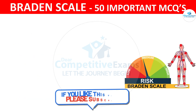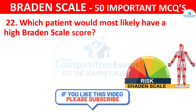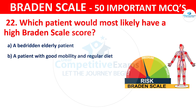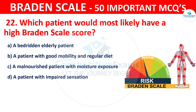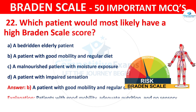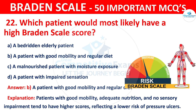Question number twenty-two: Which patient would most likely have a high Braden scale score? The options are a bedridden elderly patient, a patient with good mobility and regular diet, a malnourished patient with moisture exposure, or a patient with impaired sensation. The correct answer is B — a patient with good mobility and regular diet. Patients with good mobility, adequate nutrition, and no sensory impairment tend to have higher scores, reflecting a lower risk of pressure ulcers.